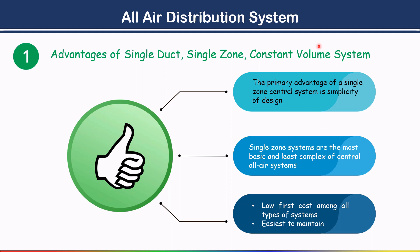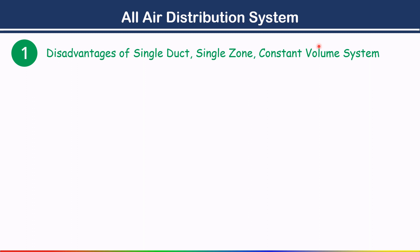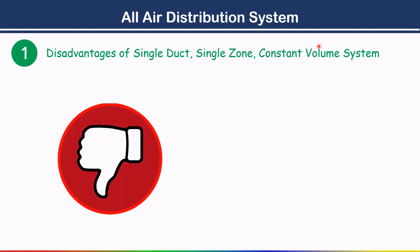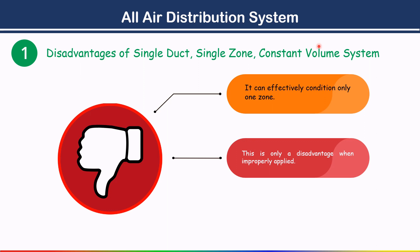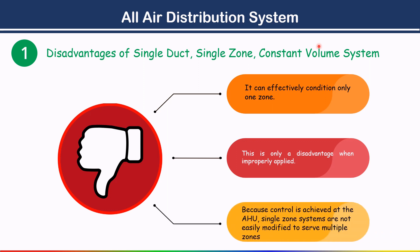The disadvantages of the single duct single zone constant volume system are: first, it can effectively condition only one zone. Second, this is a disadvantage when improperly applied, because control is achieved at the air handling unit (AHU), so single zone systems are not easily modified to serve multiple zones.